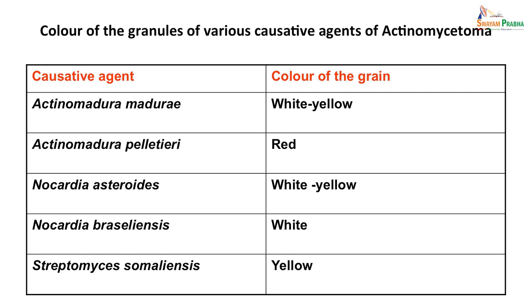As far as actinomycetoma caused by all these organisms: Actinomadura madurae produces white to yellow color of grain; Actinomadura pelletieri produces red-colored grain; Nocardia asteroides produces white to yellow colored grains; Nocardia braziliensis produces white grains; and Streptomyces somaliensis produces yellow grains. Depending on the color of grains, one can suspect which actinomycetes it is, and then further by microscopy and culture, identification can be confirmed. Most of these actinomycetes — earlier thought to be fungi — are actually gram-positive bacteria which fragment into coccoid or bacillary forms. When inhaled, they cause pulmonary lesions; they can also cause cutaneous lesions and chronic granulomatous lesions leading to mycetoma, known as actinomycetoma. Thank you.